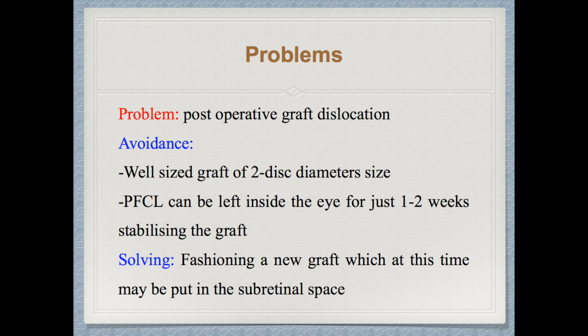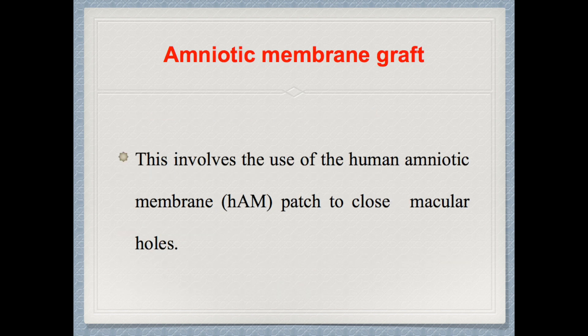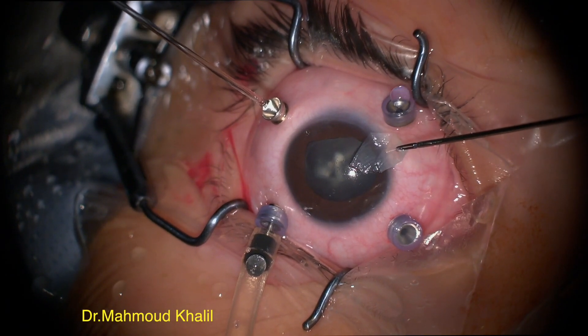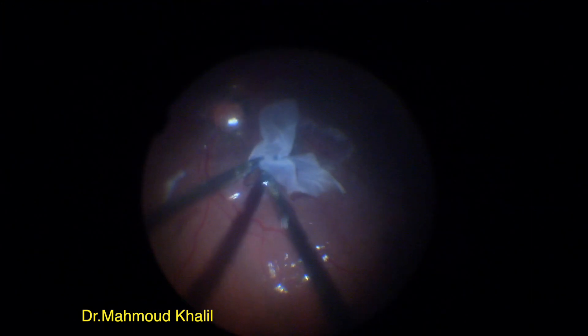The fifth technique is amniotic membrane graft, which involves the use of human amniotic membrane to close the macular hole. As seen in the video, the amniotic membrane is prepared outside the eye, then placed on the surface of the macular hole, followed by injection of peripheral PFCL with the other hand, and then unfolding the amniotic membrane with two forceps, waiting until it is completely unfolded on the surface of the macula.